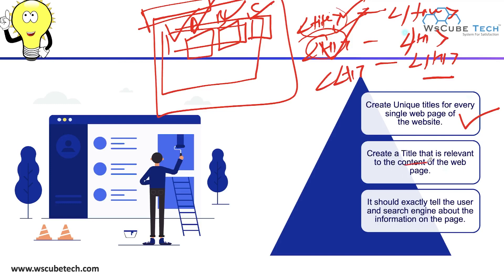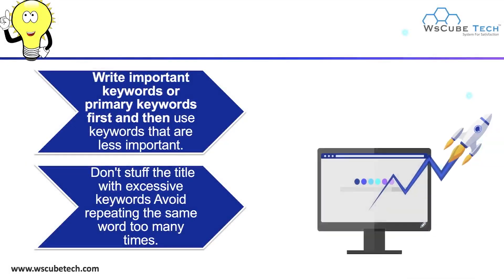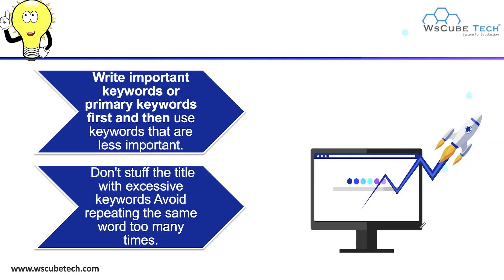Create a title that is relevant to the content of the web page. If you are writing content about online marketing, you must put that relevant keyword in your title. Your title must be relevant to the content you are writing and should exactly tell users and the search engine about the information on the page. Keep all these points in mind when writing your title tag, as these are essential steps to optimize it.